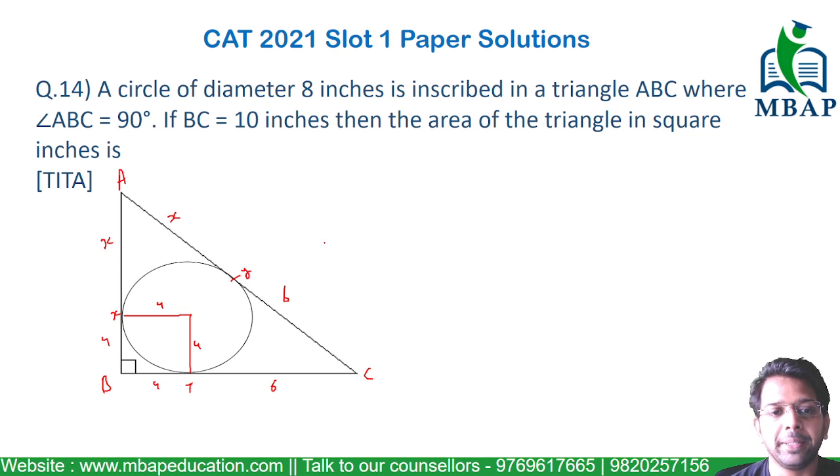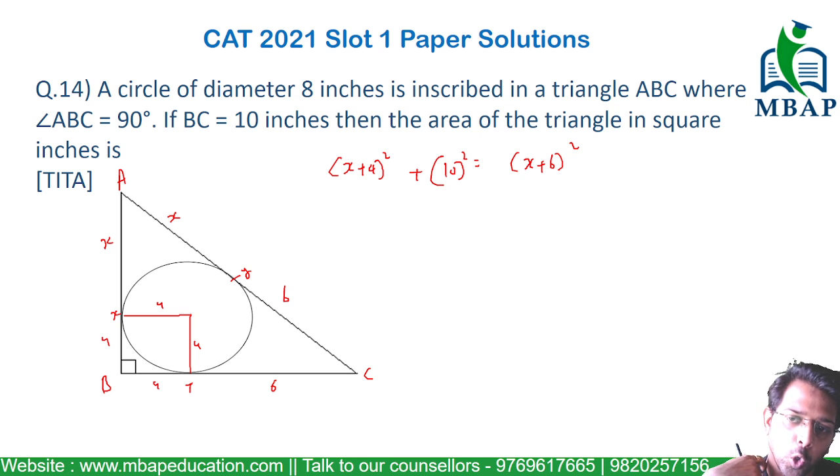We also know ABC is a right-angled triangle. Certainly, in that case, X plus 4, the whole square, plus 6 plus 4, 10 square, should ideally be X plus 6, the whole square. Now, X plus 4, the whole square, plus 10 square, is equal to X plus 6, the whole square.